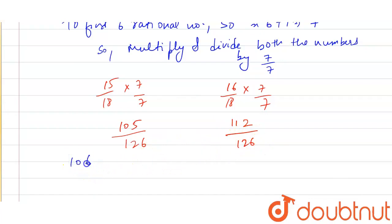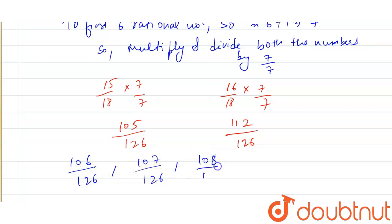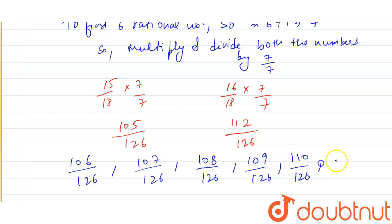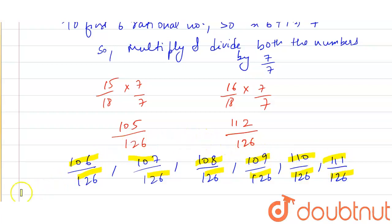The 6 rational numbers between 105/126 and 112/126 are: 106/126, 107/126, 108/126, 109/126, 110/126, and 111/126 — these are the 1st, 2nd, 3rd, 4th, 5th and 6th rational numbers between the two given numbers.